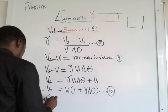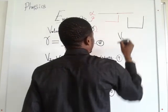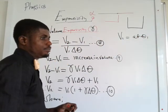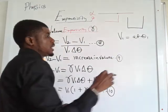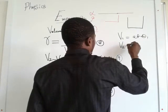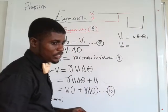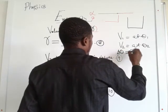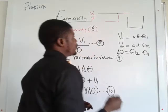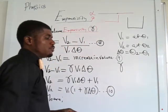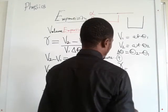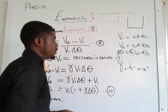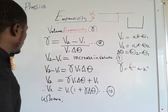Where: V1 is the original volume of the object at temperature theta 1, measured in metres cubed; V2 is the new volume due to the addition of heat energy at temperature theta 2; change in temperature equals theta 2 minus theta 1; and gamma is the coefficient of volume or cubic expansivity measured in per degree Celsius or per Kelvin.